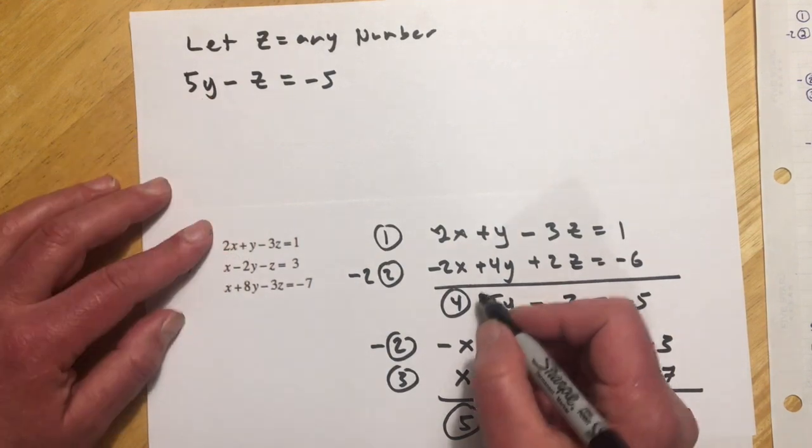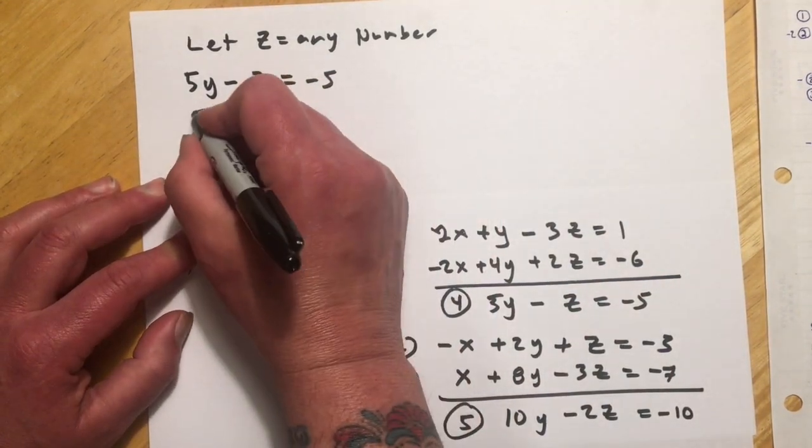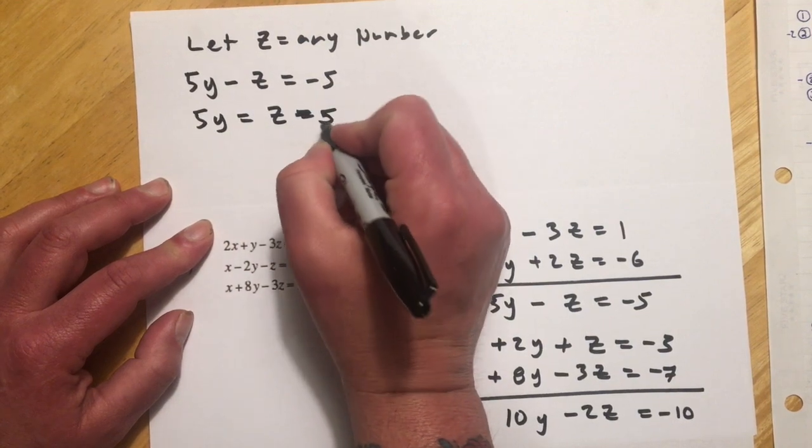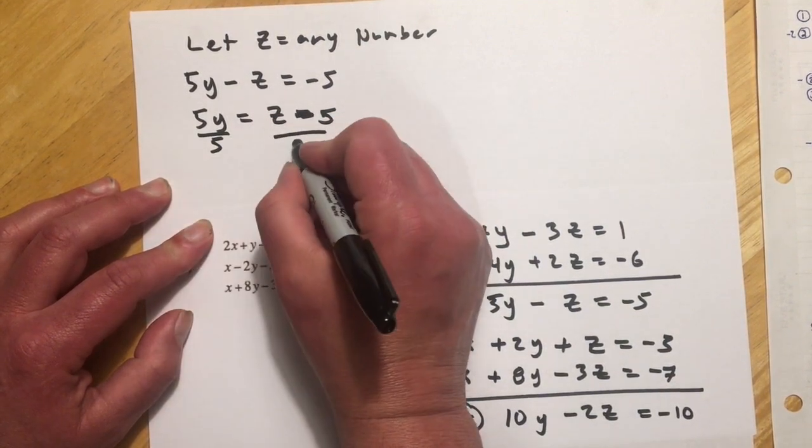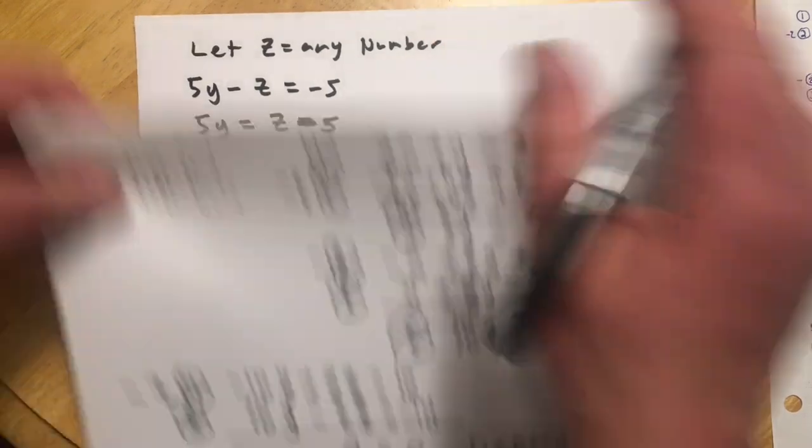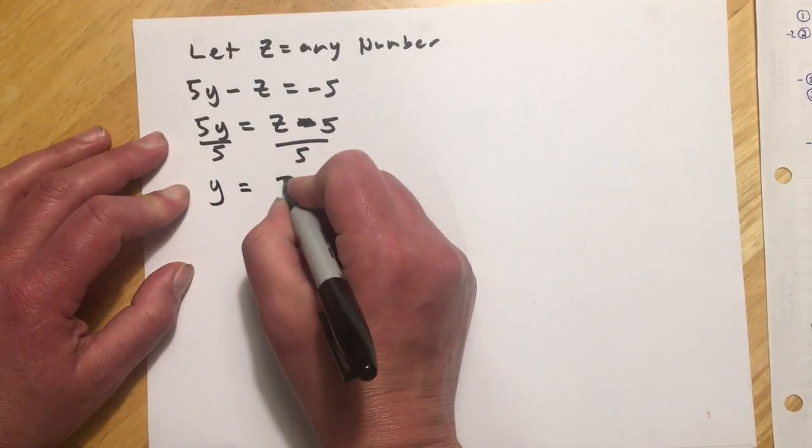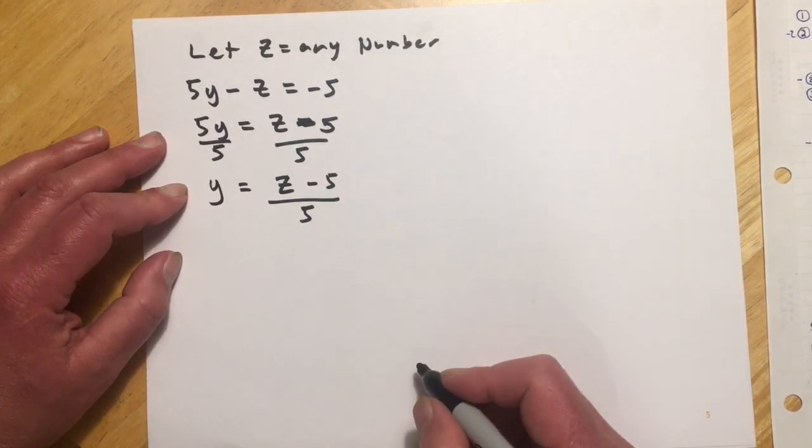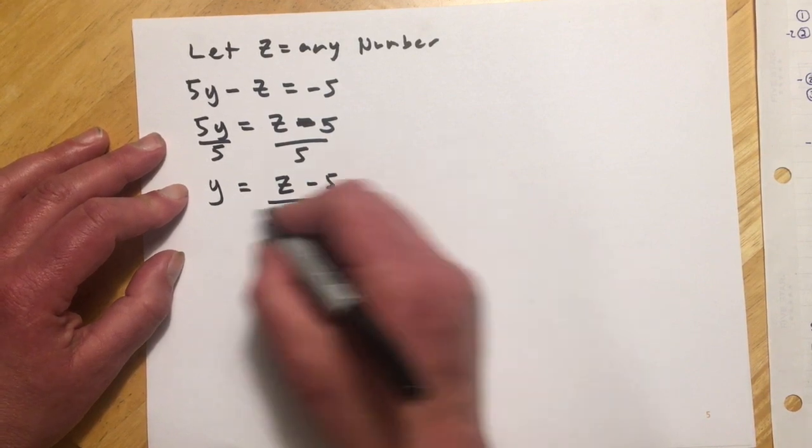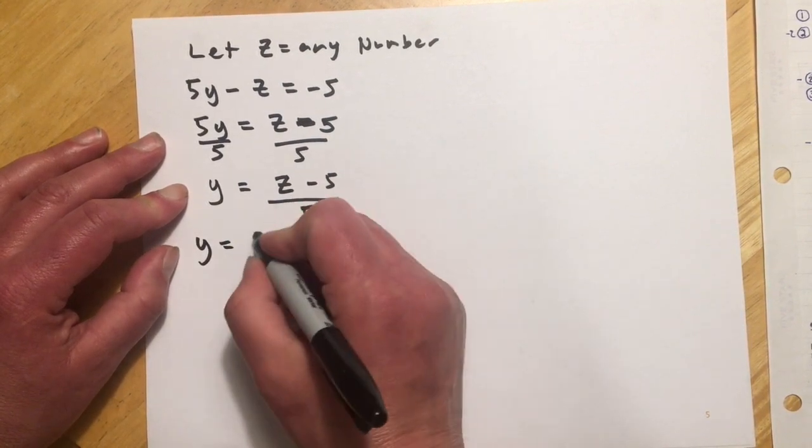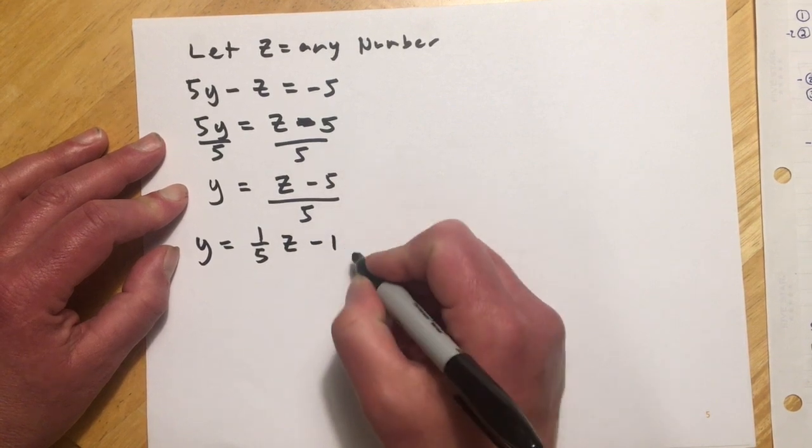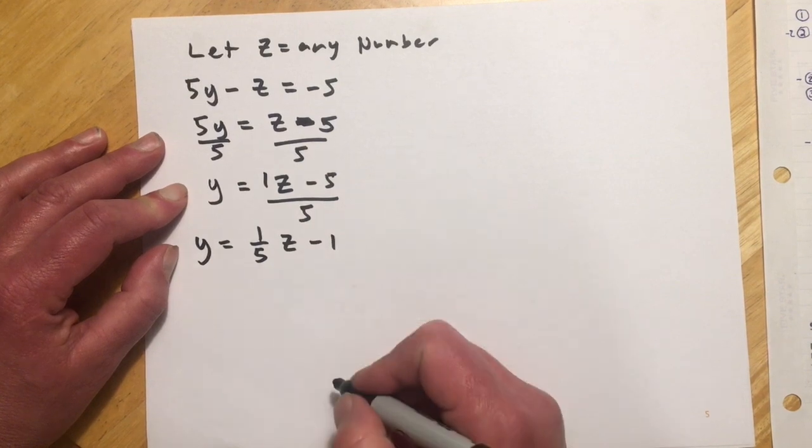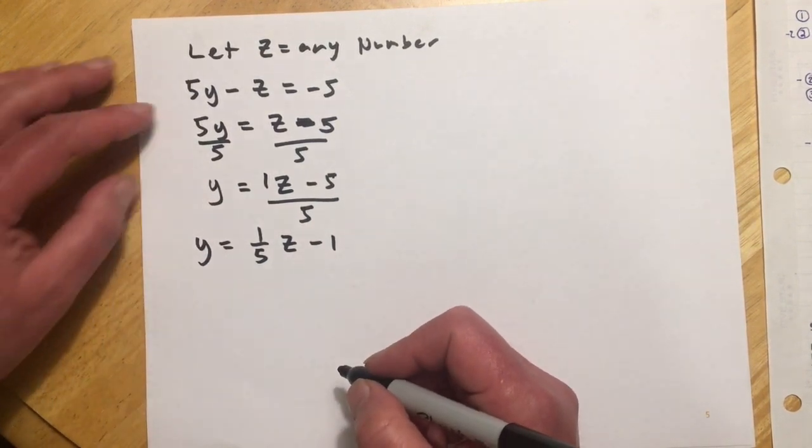And then I'm going to solve this for y. So I'm going to add the z over, and then divide by 5. And so I get y equals z minus 5 over 5. If I want to write that a little less fraction, I could also write it one-fifth z minus one. So one over five is one-fifth, and five over five is one. I think that's probably the form you would see in the book.